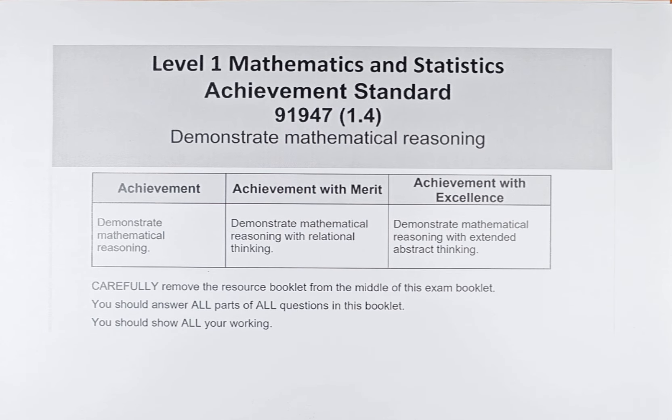Good day! In this video, we're going to do question 2b of the exemplar for the 2024 new standard called Demonstrate Mathematical Reasoning. The paper number is 91947 or 1.4 for short. So without further ado, let's do question 2b.